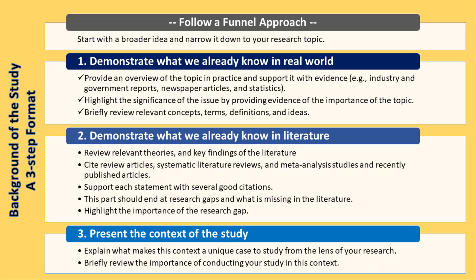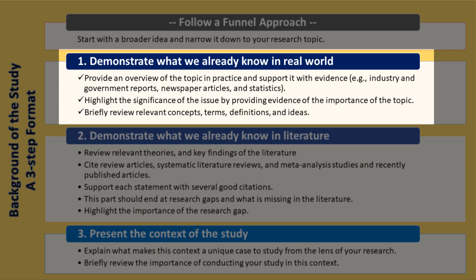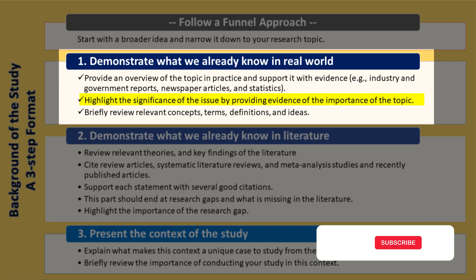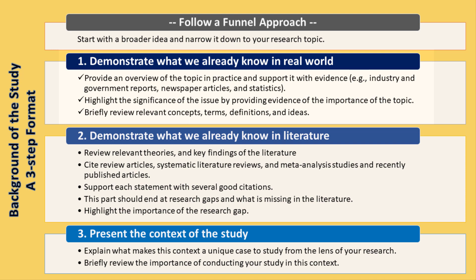Now let me share my three-step method for writing a strong research background. Print this slide and use it as a template for writing the background of your study. Generally, start with a broader idea and narrow it down to your research topic. In the first part, show what we already know about the topic in practice. I personally prefer to first provide an overview of the topic in practice and then support it with evidence like industry and government reports, newspaper articles, and statistics. Don't miss the opportunity to highlight the significance of the issue. Also in this part, briefly review relevant concepts, terms, definitions, and ideas to help your target audience get familiar with your research work.